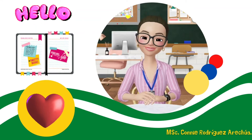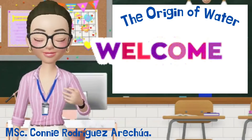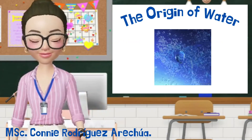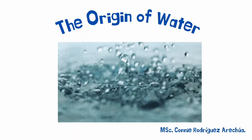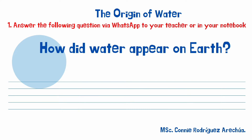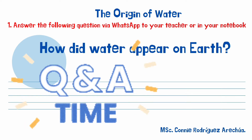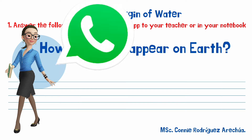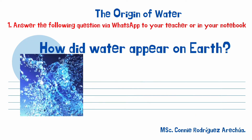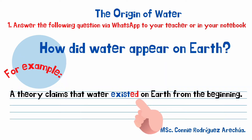Hello everyone, welcome to another day of class. The topic is the origin of water. Activity one: answer the following question via WhatsApp to your teacher or in your notebook — how did water appear on Earth? For example, a theory claims that water existed on Earth from the beginning.